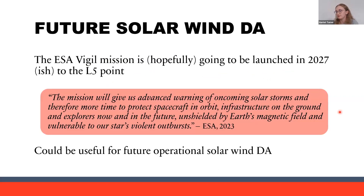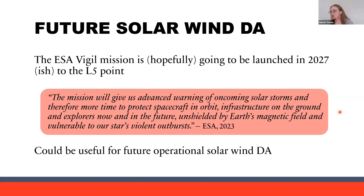So what does this mean for future solar wind DA? The ESA Vigil mission is hopefully going to be launched in the late 2020s to the L5 point, which is 60 degrees behind Earth in longitude. A quote from ESA says the mission will give advanced warning of oncoming solar storms and therefore more time to protect spacecraft in orbit, infrastructure on the ground, and explorers unshielded by Earth's magnetic field — but for us it could also be useful for future operational solar wind DA.